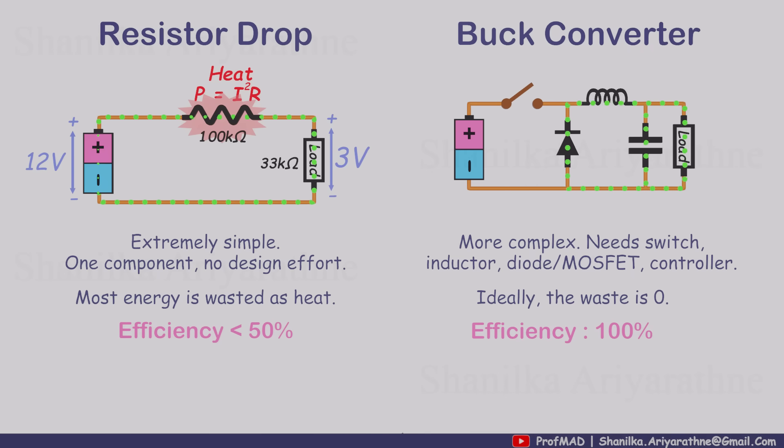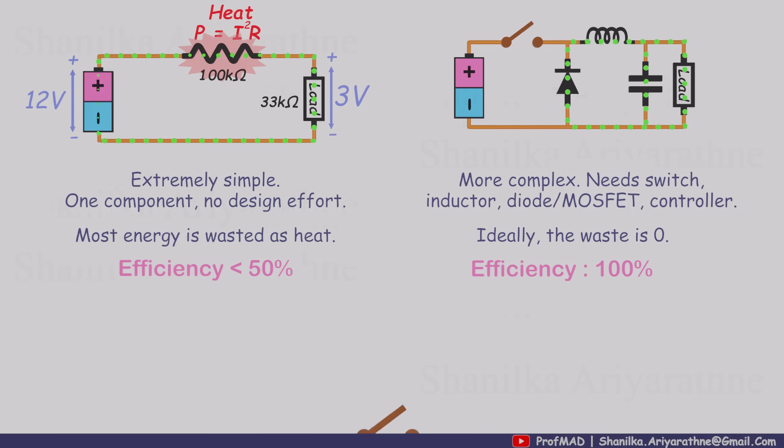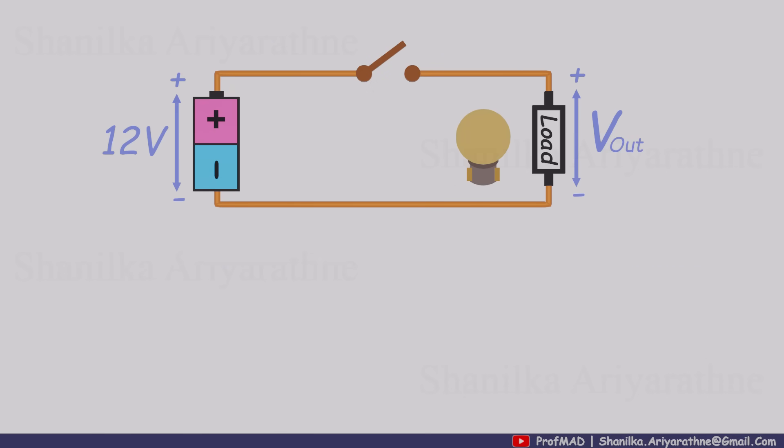So how does it actually work? Don't worry, it's not as complicated as it sounds. Imagine a simple circuit with a switch, a DC power source, and a light bulb as the load. Flip the switch on and the light turns on. Flip it off and the light turns off. Simple.